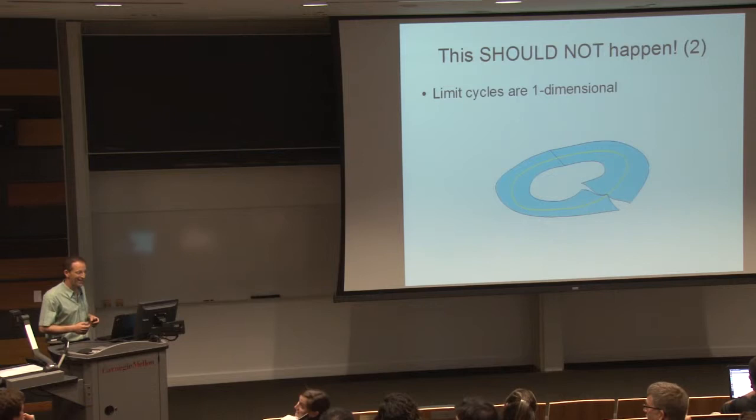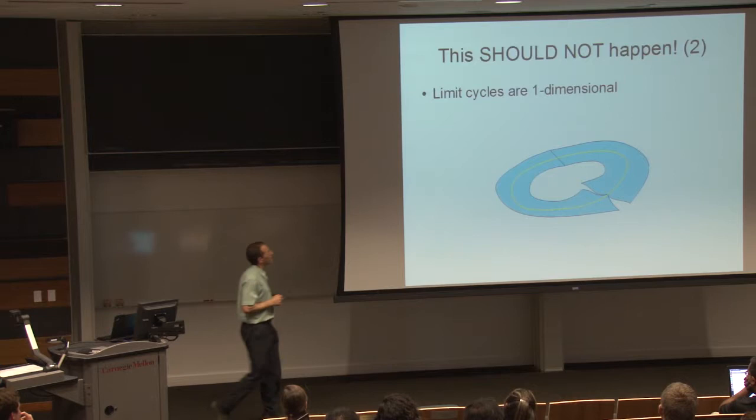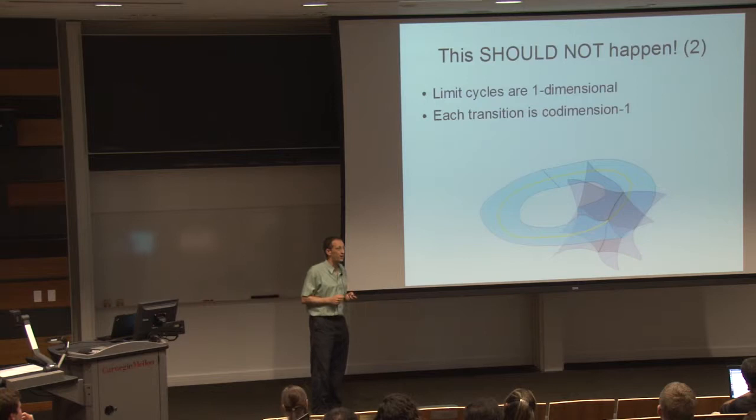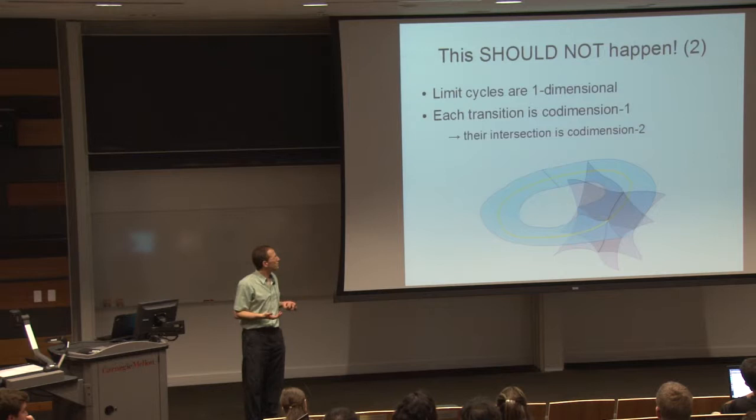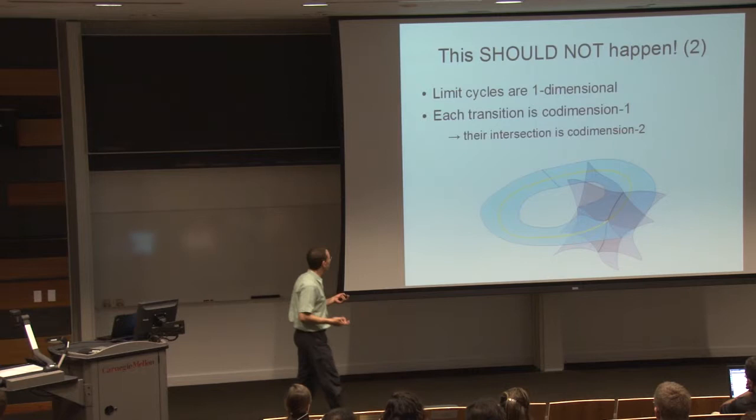Here's another reason why this should not happen. If you look at a limit cycle — a one-dimensional object in state space — each transition of hitting the ground is meeting a one-dimensional condition. So these two conditions together are co-dimension two. A one-dimensional object and a co-dimension two object should never meet — it's like two lines in space at random. We should never see this happening. Generically, it should just not be.